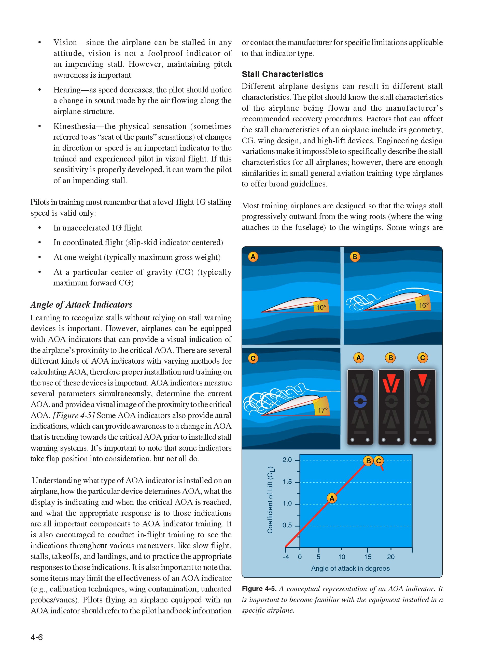Pilots in training must remember that a level flight 1G stalling speed is valid only in unaccelerated 1G flight — in coordinated flight with the slip/skid indicator centered, at one weight (typically maximum gross weight), and at a particular center of gravity (CG), typically maximum forward CG. Angle of attack indicators: Learning to recognize stalls without relying on stall warning devices is important; however, airplanes can be equipped with AOA indicators that provide a visual indication of the airplane's proximity to the critical AOA. AOA indicators measure several parameters simultaneously, determine the current AOA, and provide a visual image of the proximity to the critical AOA. Some AOA indicators also provide aural indications, which can provide awareness of a change in AOA trending towards the critical AOA prior to installed stall warning systems.